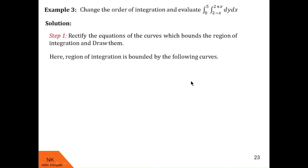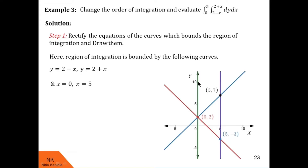In this case, the region of integration is bounded by the curves y = 2 minus x, y = 2 plus x, x = 0, and x = 5. Now let us draw these curves. This is y = 2 plus x, this is y = 2 minus x, this is x = 5, and this is x = 0. The area bounded by these curves is this region.